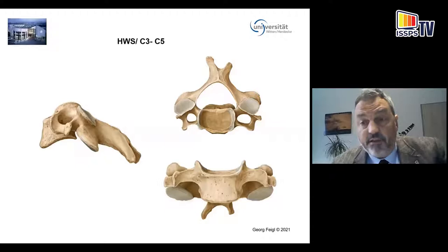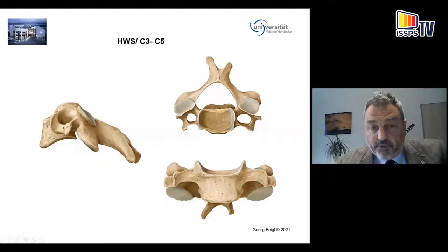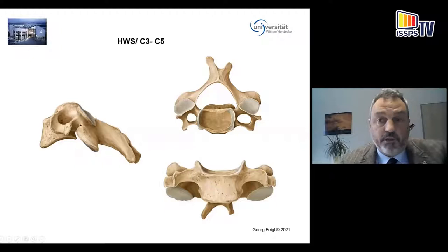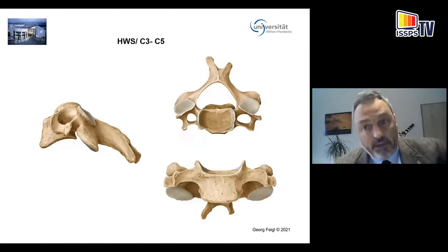From the lateral view of this vertebra, you see these two tubercles forming a real groove in between, which is used by the spinal nerve and the ventral branch of the spinal nerve. This spinal nerve branch has to pass the vertebral artery dorsally. And additionally, there is the origin of the dorsal branch, which is very close to the intervertebral foramen. So the spinal nerve trunk itself has only a very short extension of no more than two to three millimeters in the cervical spine area.